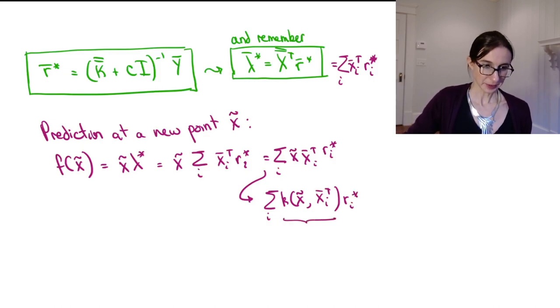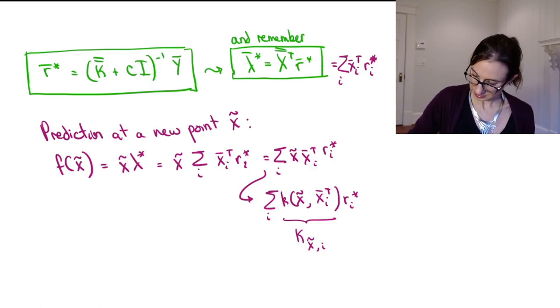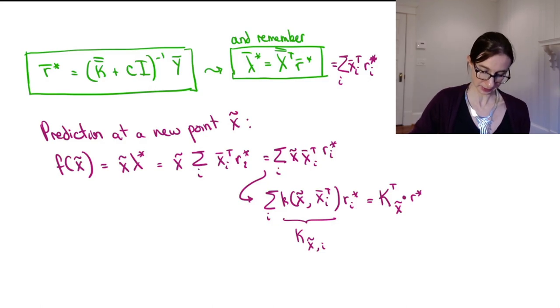Okay. So now I can replace them with kernels. Okay, I'm going to call this k of x tilde i. It means the same thing. This is just slightly different notation. So what I end up with,